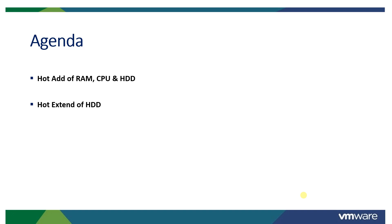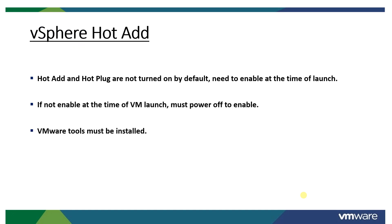In our previous session we discussed about the hot-add of RAM and CPU. We did a lab on that in VMware hands-on lab, and everything discussed theoretically was practically proved. We saw that hot-add and hot-plug are features not turned on by default. When we were creating a Linux Photon machine, we enabled the hot-add and hot-plug feature at the time of launch of that machine.